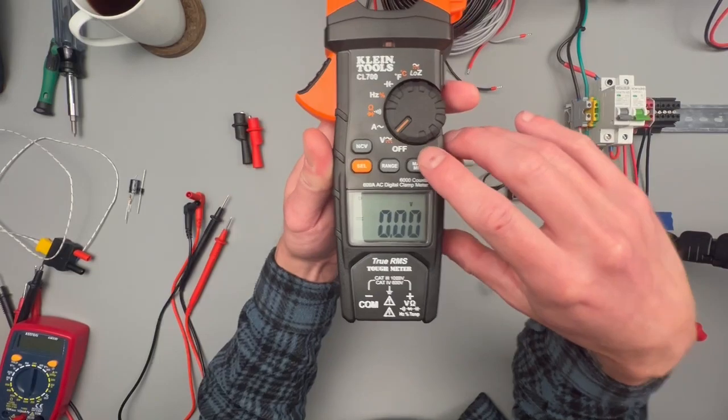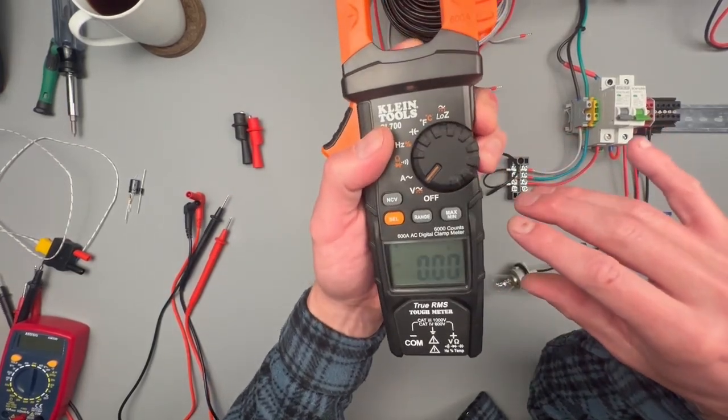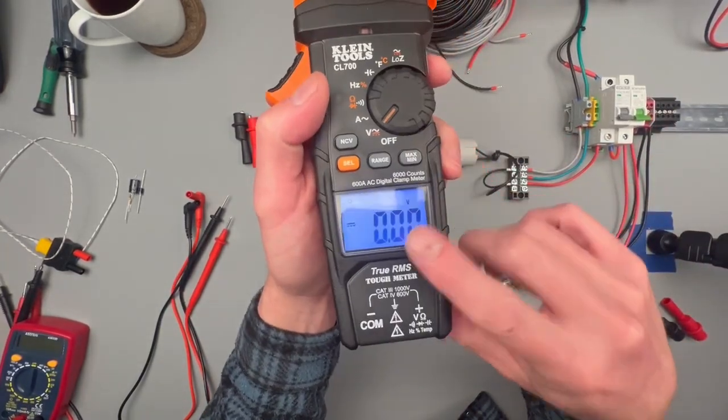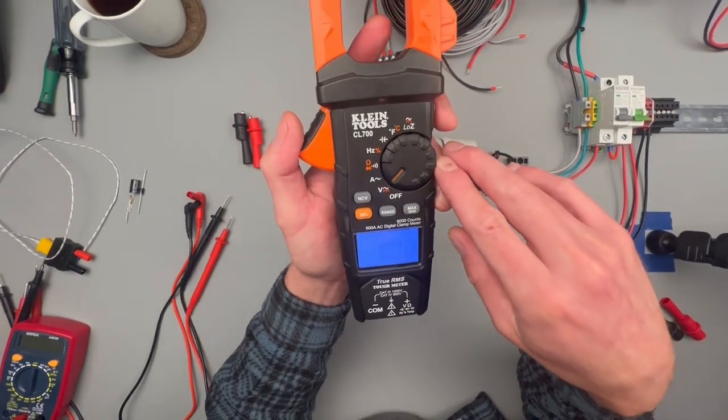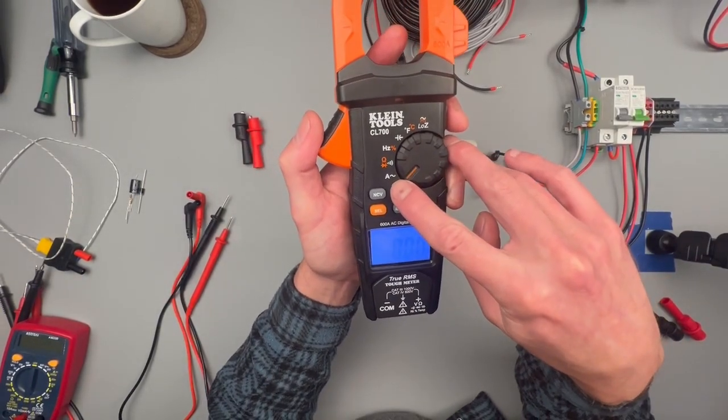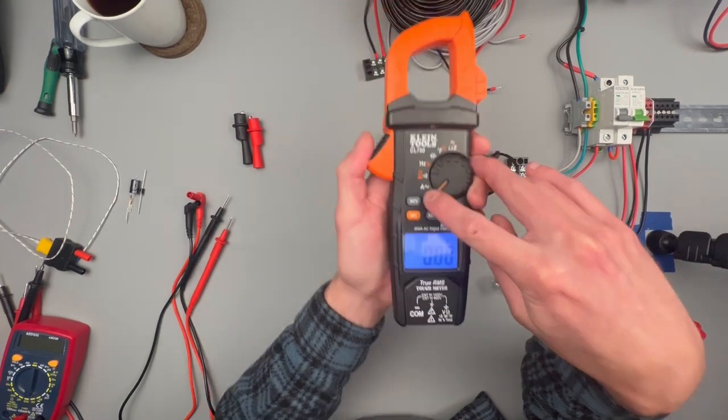Then it has your min-max values as well as if you press and hold this button here on the side, it's got a nice strong backlight, which I really like. The one feature that it is lacking is an amps DC setting for the amp clamp.